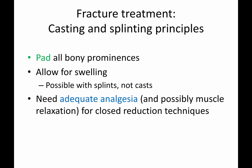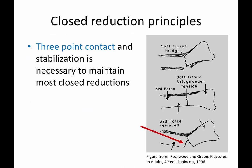You need adequate analgesia and possibly muscle relaxation for closed reduction techniques. If you're going to literally set a fracture that's very much out of place, you may possibly need anesthesia. To close reduce a fracture — for example, this angulated distal radius fracture — you apply three-point pressure: push down here, push up here, and use a third point to prevent the whole arm from moving. Without that third point, you lose control of the rest of the arm. So to stabilize it, you need this three-point contact.